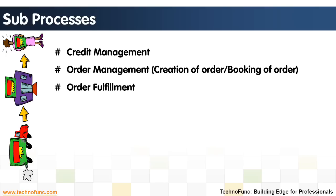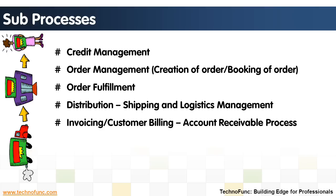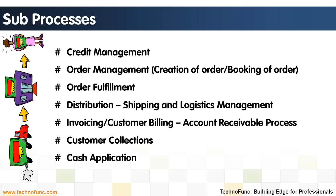Order fulfillment: making sure that the firm has the product available to be shipped to the customer. Distribution, shipping and logistics management: the actual shipping of the product to the customer. Invoicing and customer billing accounts receivable: raising an invoice to the customer as per regulatory requirements. Customer collections: the dunning process, reminding customers about outstanding dues and collecting money. Cash application: accounting for the cash against a particular invoice. Dispute management: handling disputes or adjustments arising in the natural course of business.